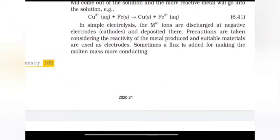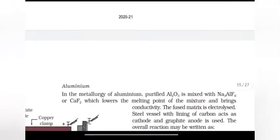In simple electrolysis, the Mn+ ions are discharged at negative electrodes and deposited there. Precautions are taken considering the reactivity of the metal produced and the suitable materials are used as electrodes. Sometimes a flux is added for making the molten mass more conducting.